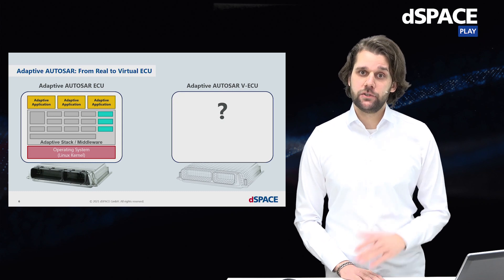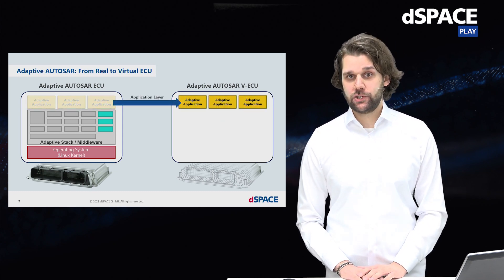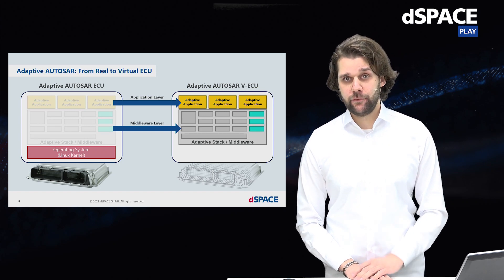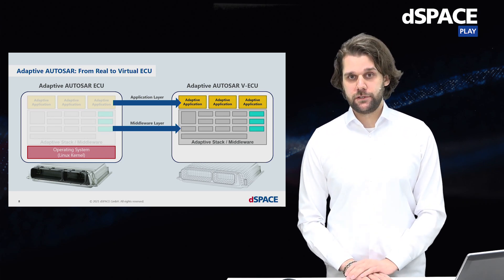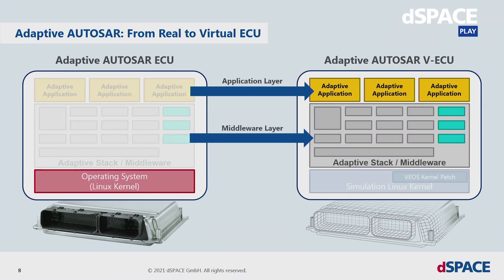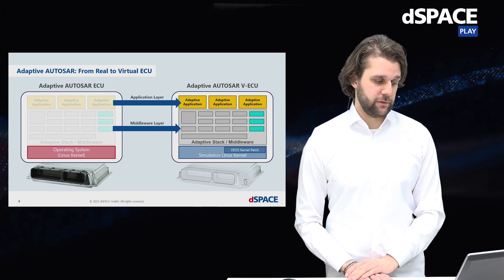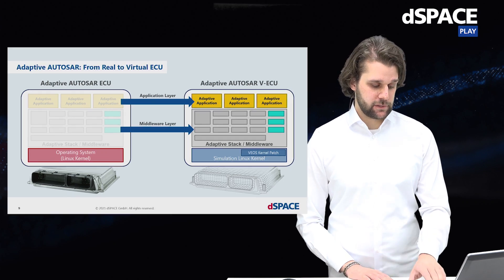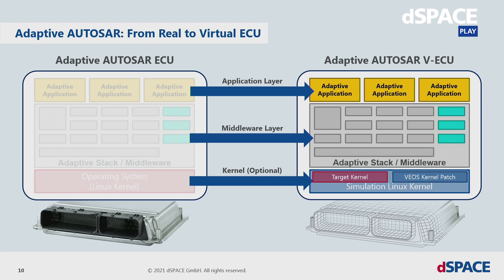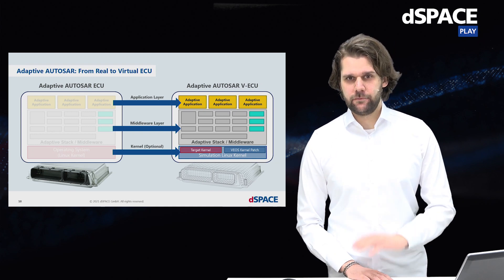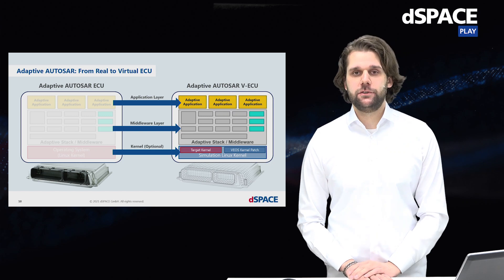We want to bring these different layers to the virtual ECU. The application layer and all adaptive applications come to the virtual ECU, as does the middleware layer. However, for the operating system, we use our own simulation Linux kernel from DSpace, which has some beneficial patches. If you have specific adjustments for your Linux kernel, we can incorporate those too, creating a custom simulation Linux kernel with both your patches and ours — though this is an optional step; you can just use our simulation Linux kernel.